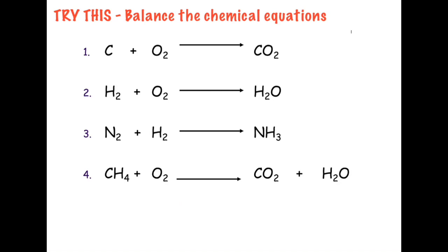All right, let's try to check. First, you have to determine how many of each atom in the reactant and product side are present. We have one carbon on the reactant and one carbon on the product, two oxygens on the reactant and two on the product. Therefore, this equation is already balanced.